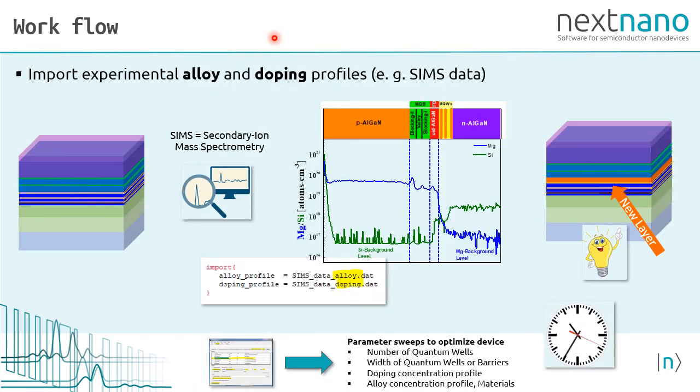We want to mention that you can import experimental alloy and doping profiles from SIMS data into the simulator. These profiles are often complex and show fluctuations, and thus you have a more realistic model. Once you have an accurate model, you can easily add new layers or vary the doping profile to check if it improves your device. This will save you a lot of time.